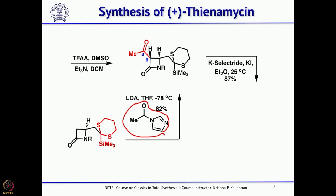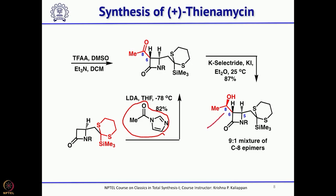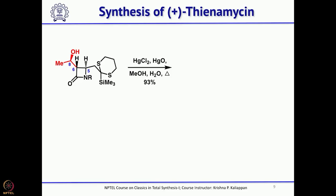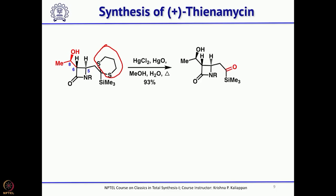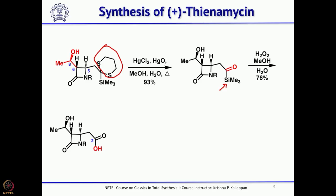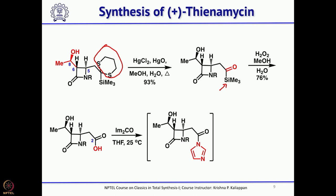The major isomer was taken and treated with mercury chloride and mercury oxide to remove the dithiane and obtain the corresponding ketone. Then the TMS group was treated with hydrogen peroxide to give the carboxylic acid.